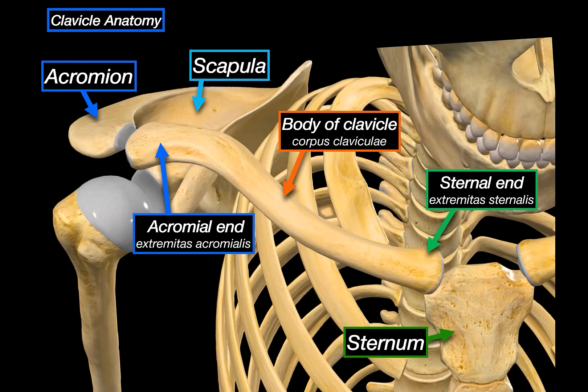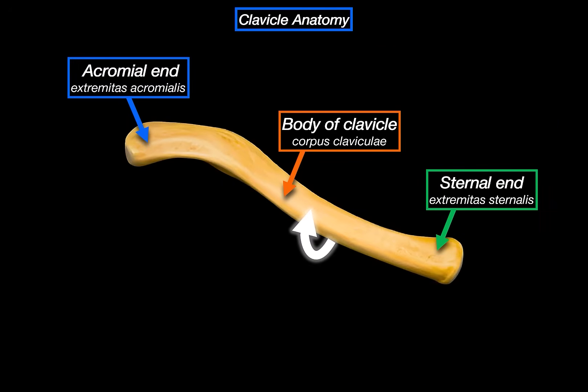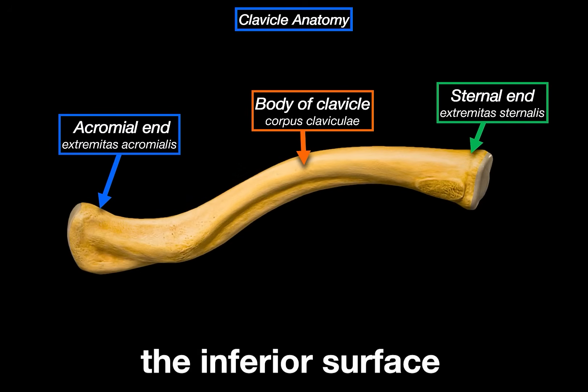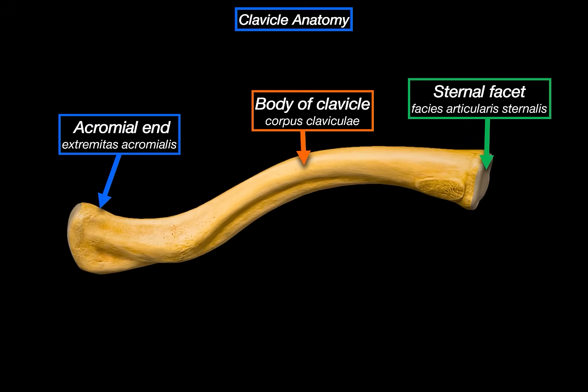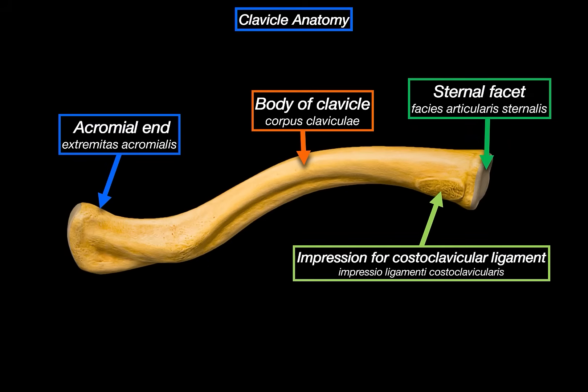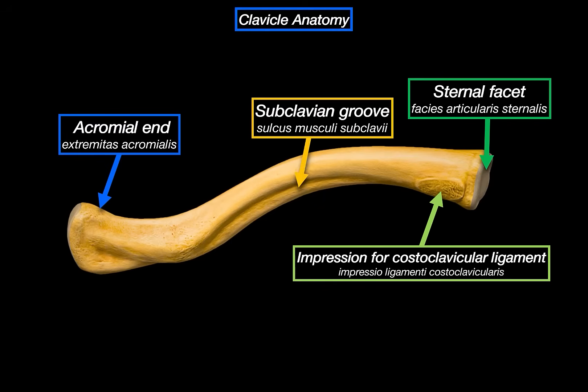Let's expand on this. We will isolate the clavicle again and rotate it slightly to see the inferior surface. On the medial side, we can see a smooth surface called the sternal facet — that's where it meets the manubrium. Just below it, this rough patch is the impression for the costoclavicular ligament, which is involved in stabilizing the medial joint. As we move across the body, this long groove is the subclavian groove, where the subclavius muscle sits and anchors.